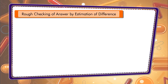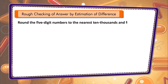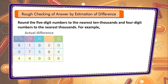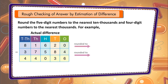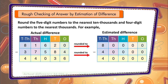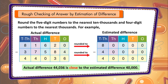Rough checking of an answer by estimation of difference. Round five-digit numbers to the nearest ten thousands and four-digit numbers to the nearest thousands. For example, the actual difference 44,036 is close to the estimated difference 40,000.